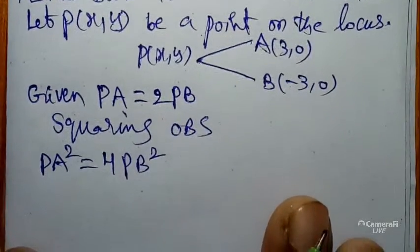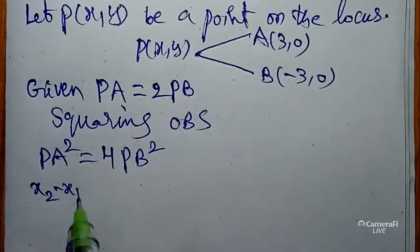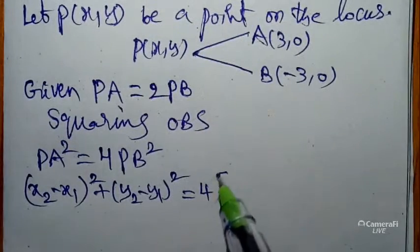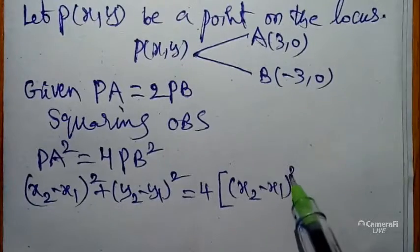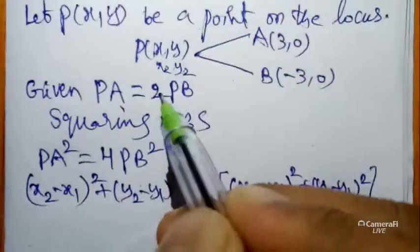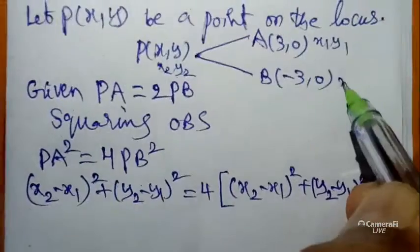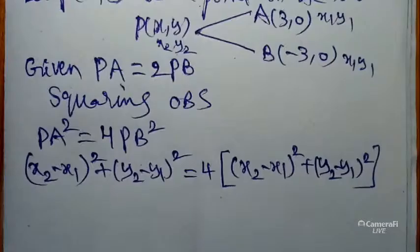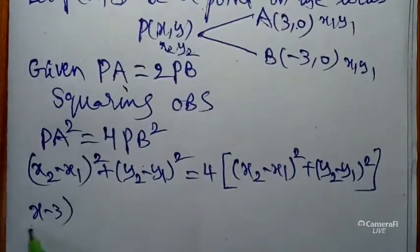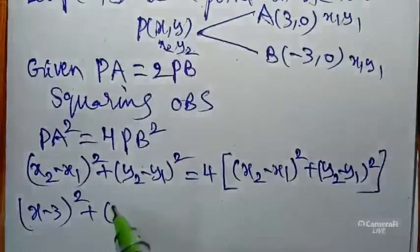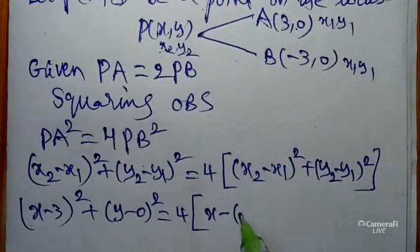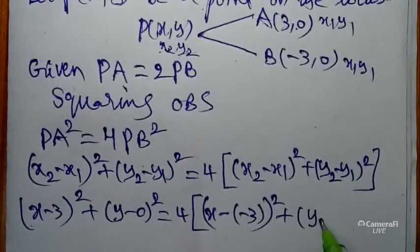Using the distance formula — (x₂ - x₁)² + (y₂ - y₁)² — we apply it to both sides. For PA²: (x - 3)² + (y - 0)² equals 4 times PB². For PB²: (x - (-3))² + (y - 0)², so (x + 3)² + y².